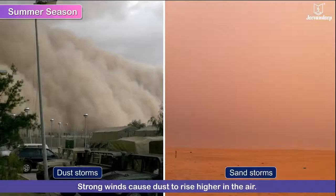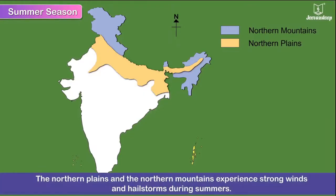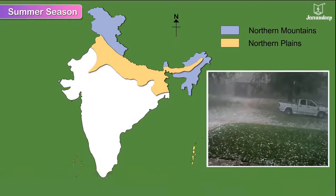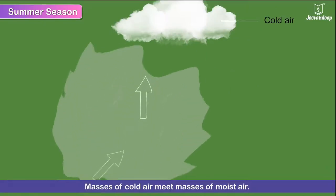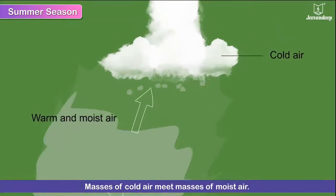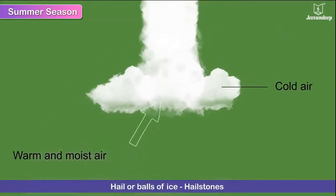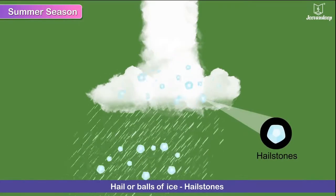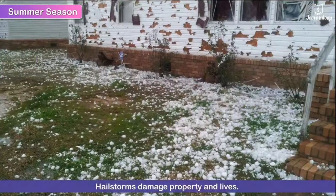Dust storms and sandstorms form when strong winds cause dust to rise high in the air, resulting in much destruction and damage. Sometimes the northern plains and northern mountains experience strong winds and hailstorms during summers. These occur when masses of cold air meet masses of moist air; during the storm, hailstones — balls of ice — fall in huge quantities, causing damage to property and lives.